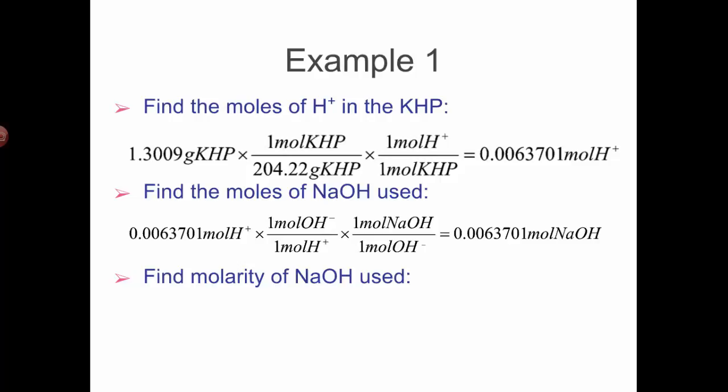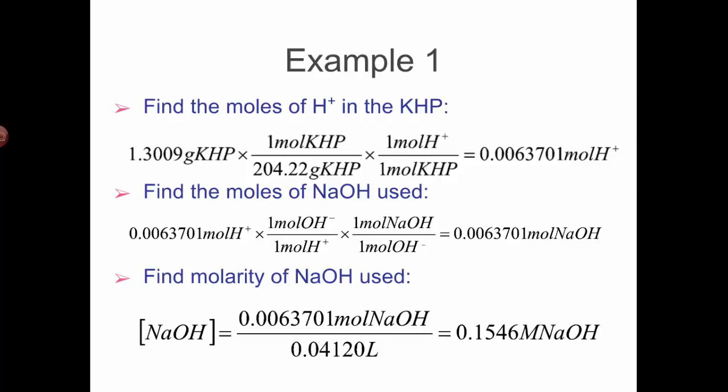To find the molarity, we take the number of moles of sodium hydroxide and divide it by the total volume of sodium hydroxide that we used, which was 41.20 milliliters or 0.04120 liters. That gives us our concentration of sodium hydroxide at 0.1546 molar. Now we know the concentration of that sodium hydroxide to four significant figures - that's really accurate. We can use that in any titration and we'll always know its concentration, which we need to know for titration.